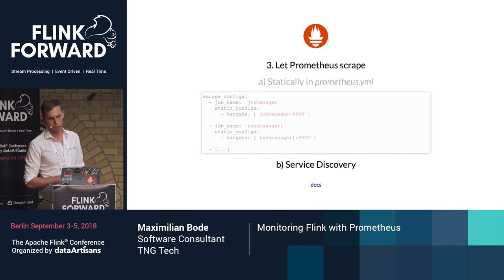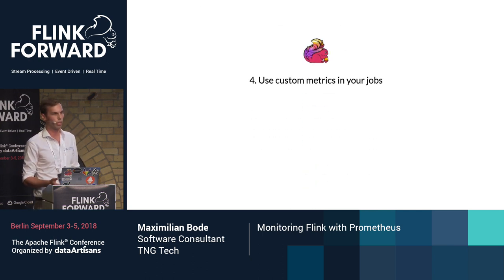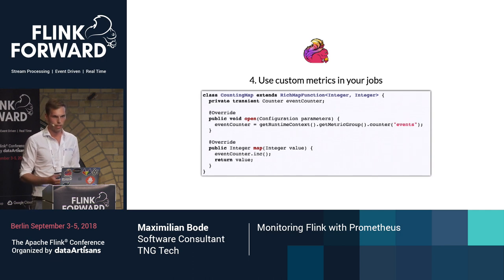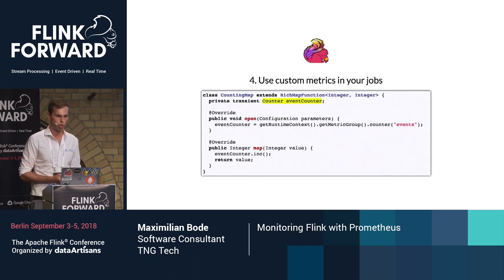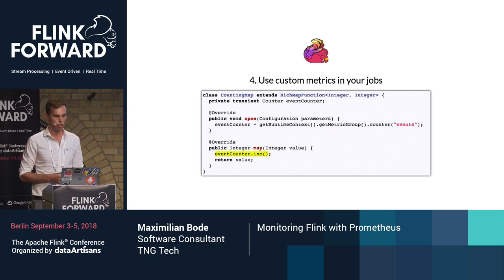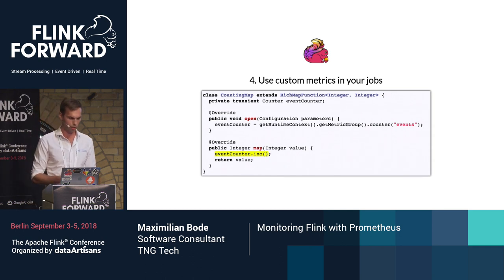It becomes really powerful if you also integrate your own business logic using custom metrics in your jobs. Here's a very small toy example: a map that does nothing but count how many events are going through it. To do this, I just need to use a counter object, register it with my Flink runtime, and then increment it on each invocation of this map function. More involved examples are of course possible.